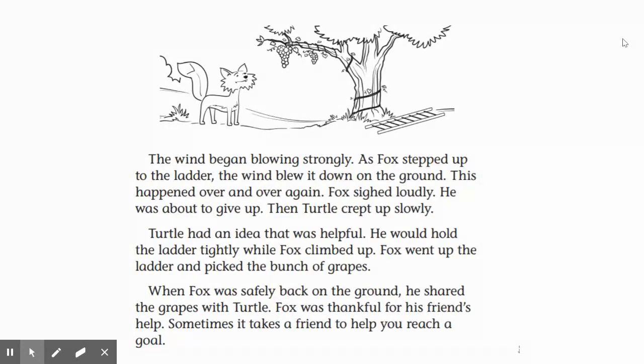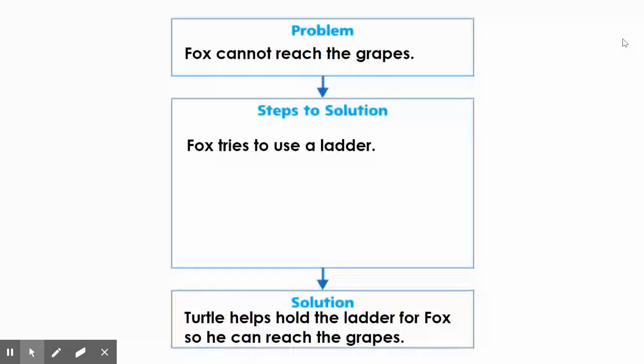Wow, I think that's what this story was trying to teach me—that sometimes you can't do things on your own and you need a friend to help you. In this case, Turtle helped Fox, and we saw that the solution was Turtle helps hold the ladder for Fox so he can reach the grapes. Because the ladder by itself didn't work since the wind blew it over, he needed a friend to help him hold it steady.